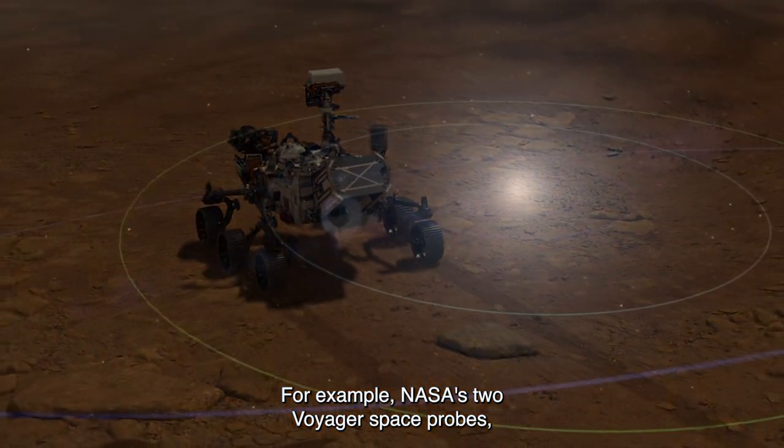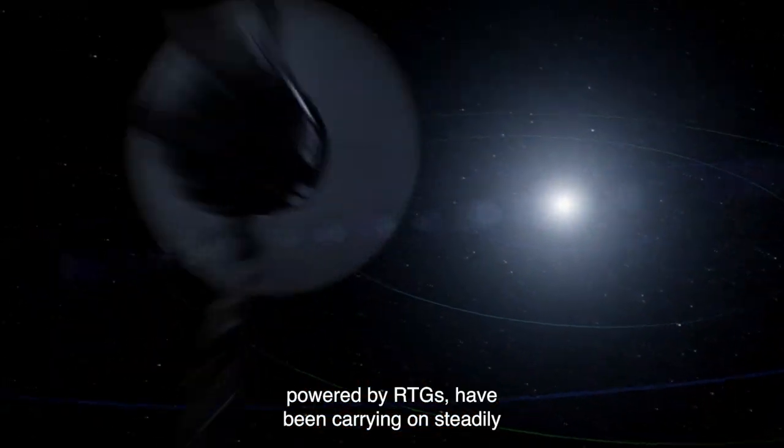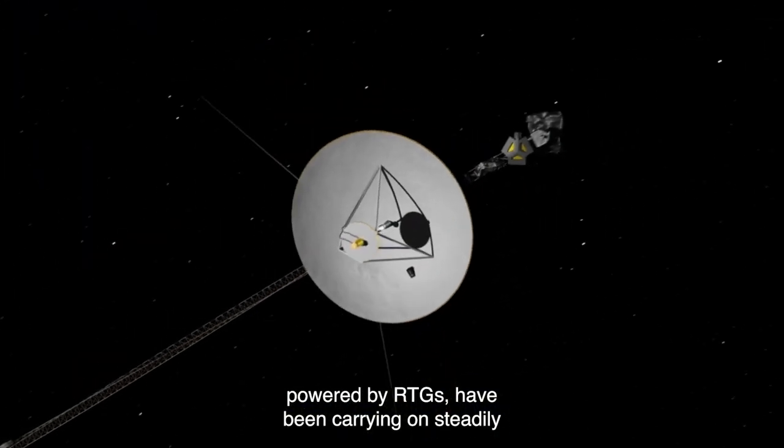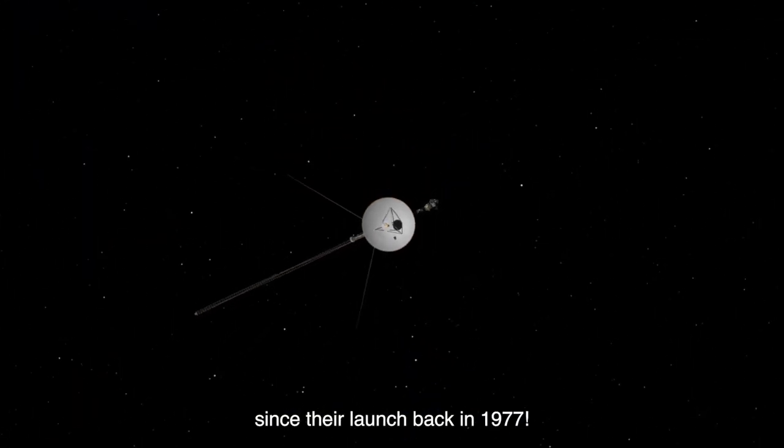For example, NASA's two Voyager space probes, powered by RTGs, have been carrying on steadily since their launch back in 1977.